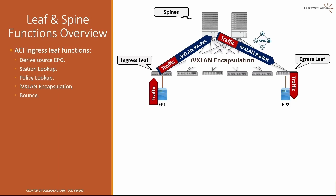The ingress leaf also handles bounce: in case a local endpoint has moved to another leaf, it updates the station table to point to the new location, so that any incoming traffic to that endpoint will be bounced to the new location.